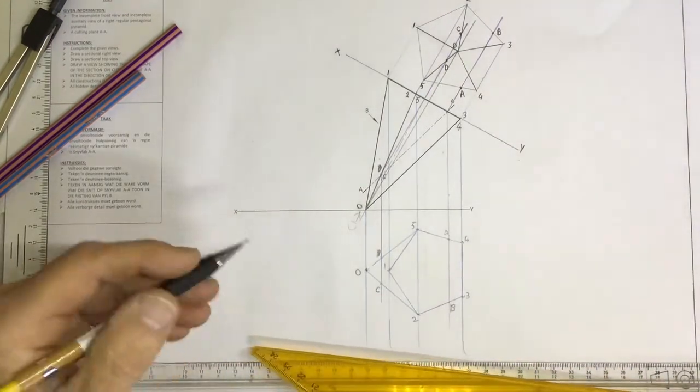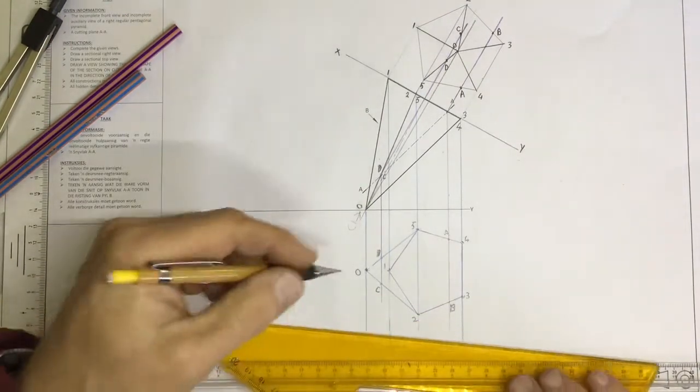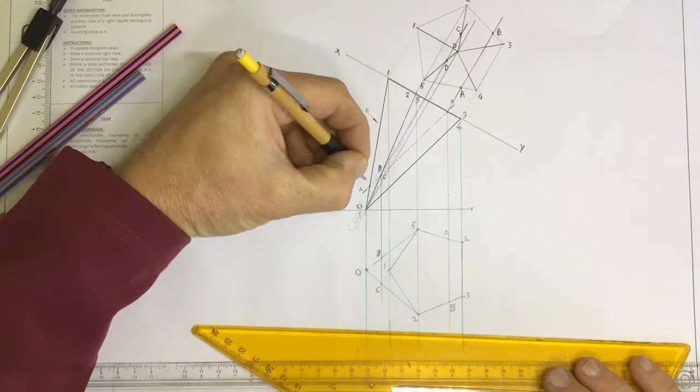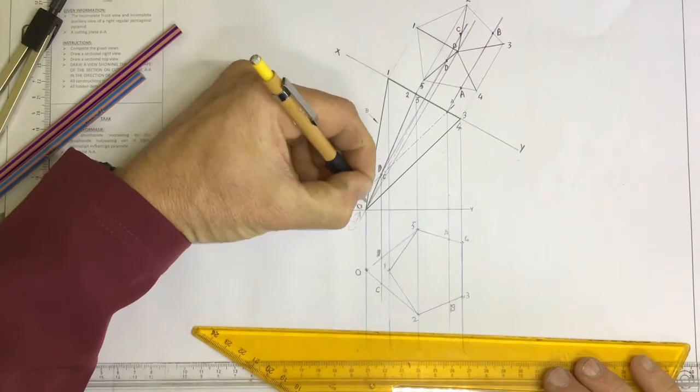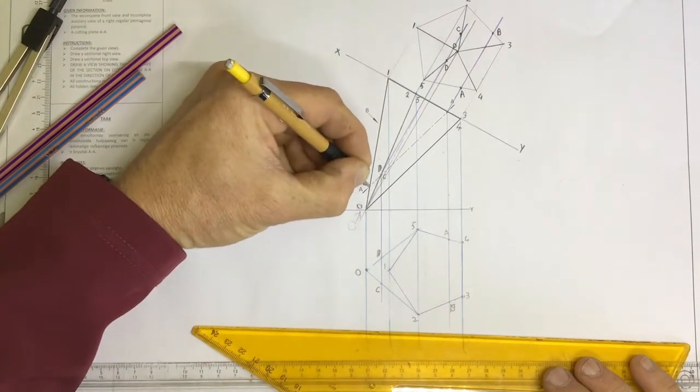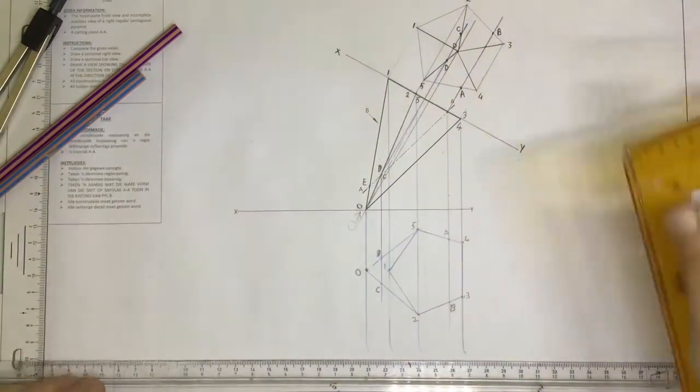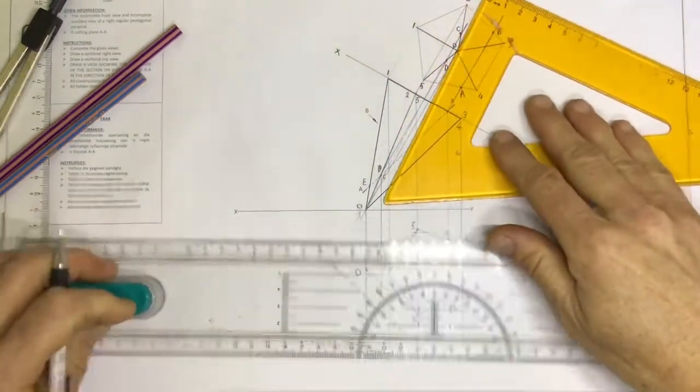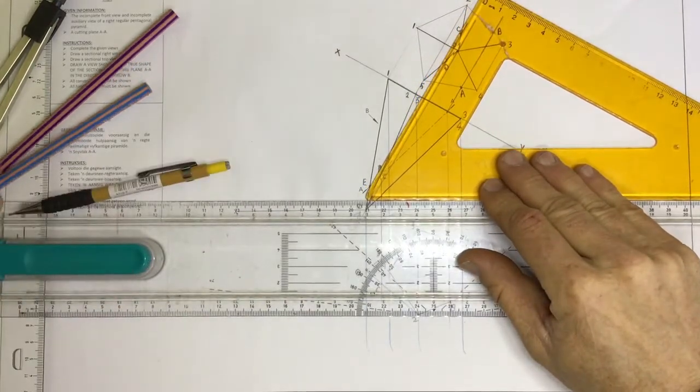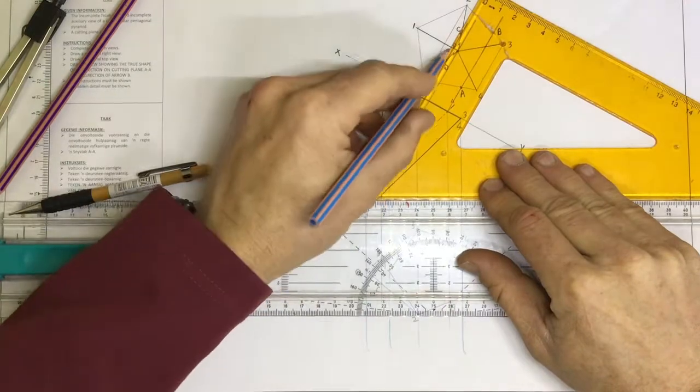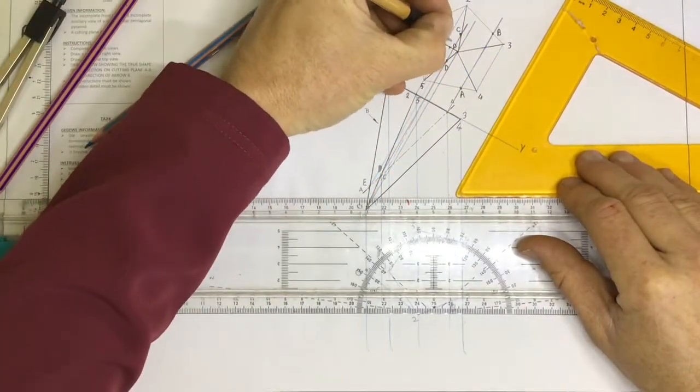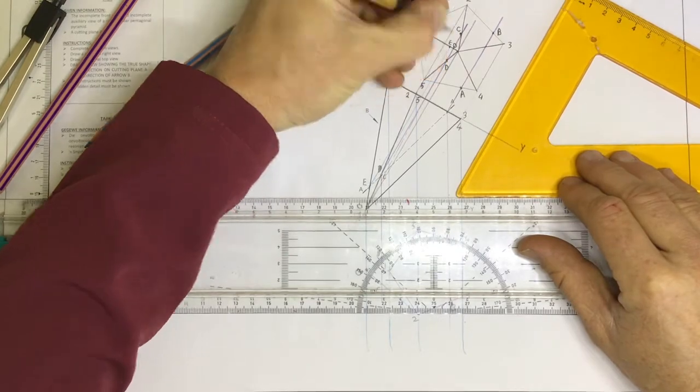What else do I need? Well, I need to know that it's also cutting through this point over here. Let's call that point E. Note there's only one line over here. So there's only one point that it can cut. Let's find out where that cuts on this auxiliary view over here. Taking that up. There you go. That would be where E is cutting through.